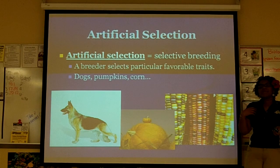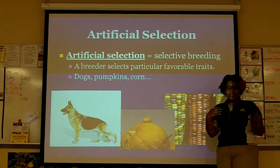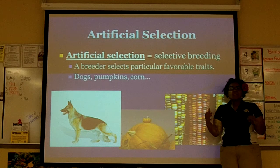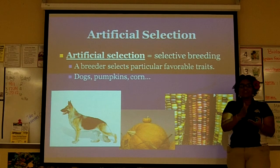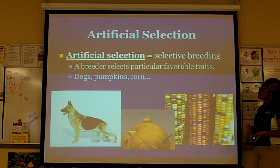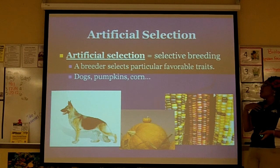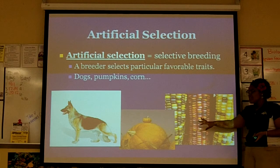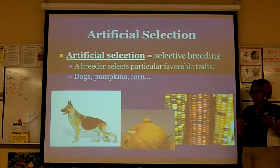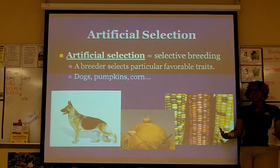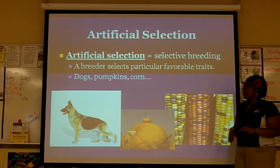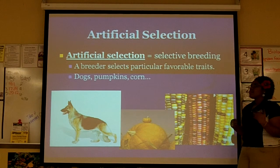With natural selection, there's also artificial selection. If you're a dog breeder, that is artificial selection, because you're selecting certain traits that you want to have in your dog. Even pumpkins and corn — corn typically has different colors, but the corn you get in the store is artificially selected, like, 'we want this type of yellow corn' or all-white corn. You're selecting those favorable traits.